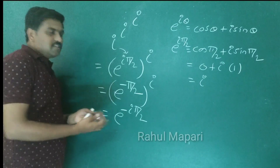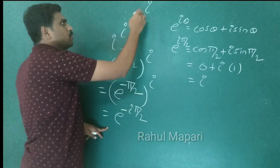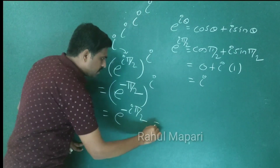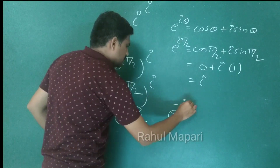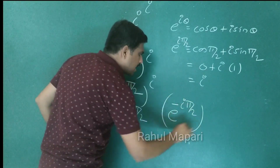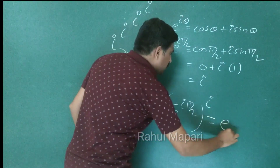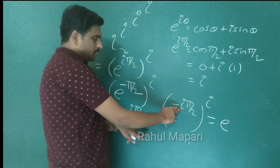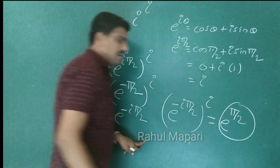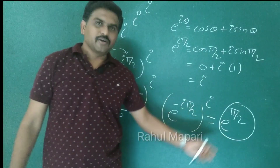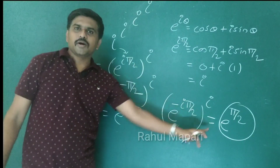If you again increase the power, like i over i over i over i, so what we get? This is nothing but e power minus i pi by 2, all over i. And its value is e power — i into i is minus 1, and minus times minus gives plus — so e power pi by 2. So i over i over i over i, we get e power pi by 2.